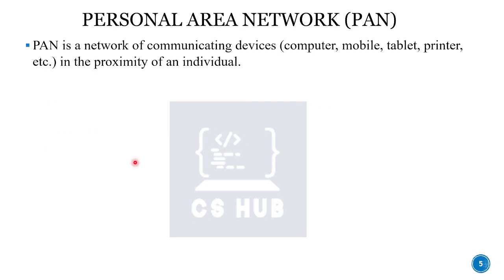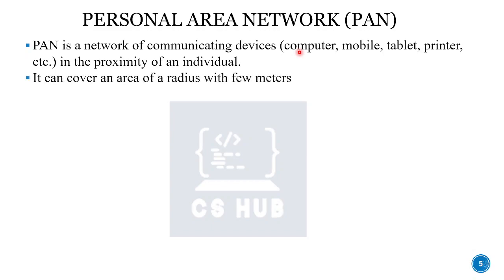PAN is a Personal Area Network. It connects devices in the proximity of an individual. PAN is a network of communicating devices — such as a computer, mobile, tablet, and printer — in the proximity of an individual. It can cover an area with a radius of a few meters.